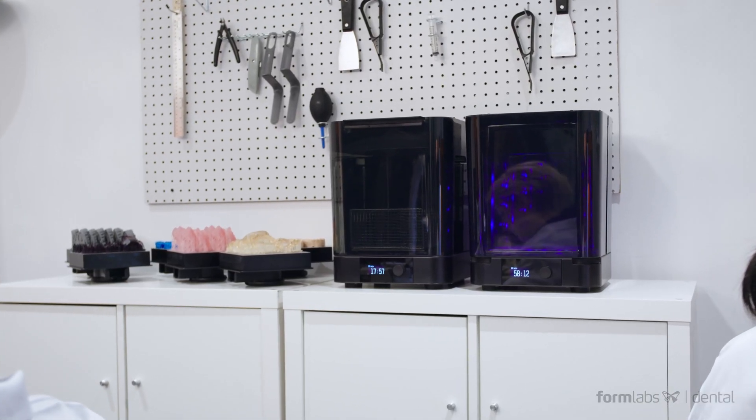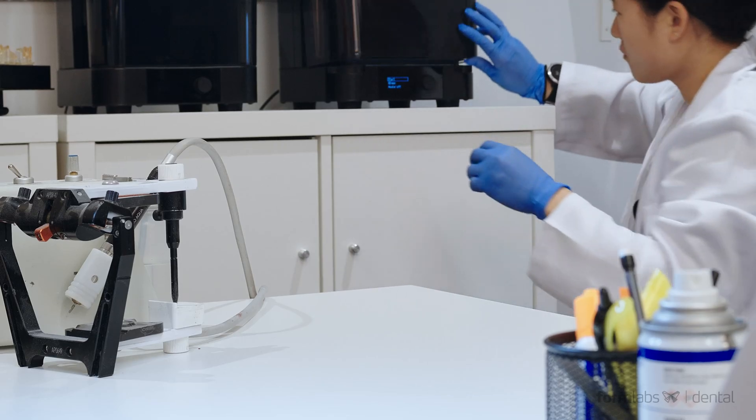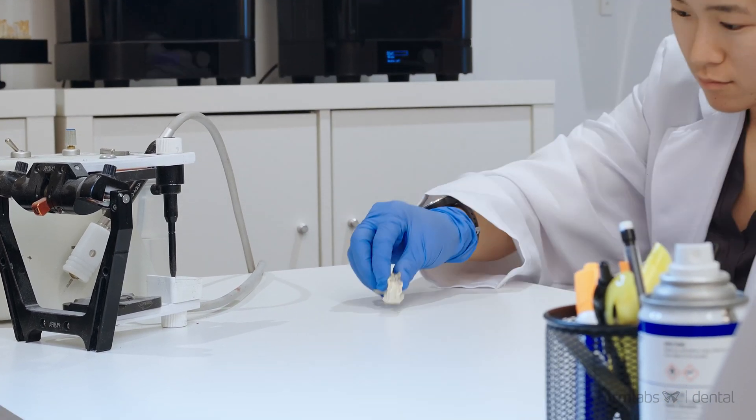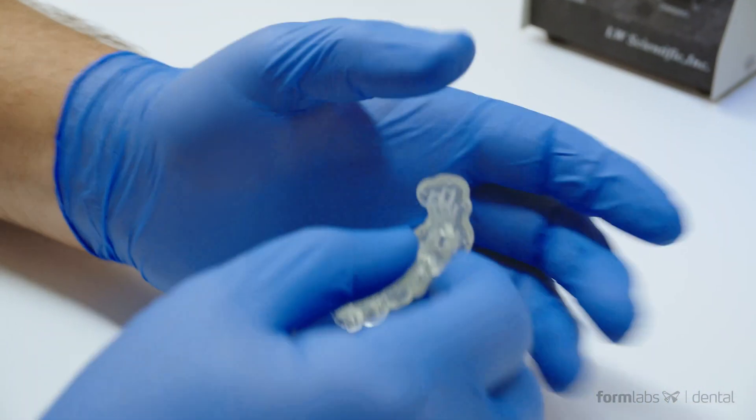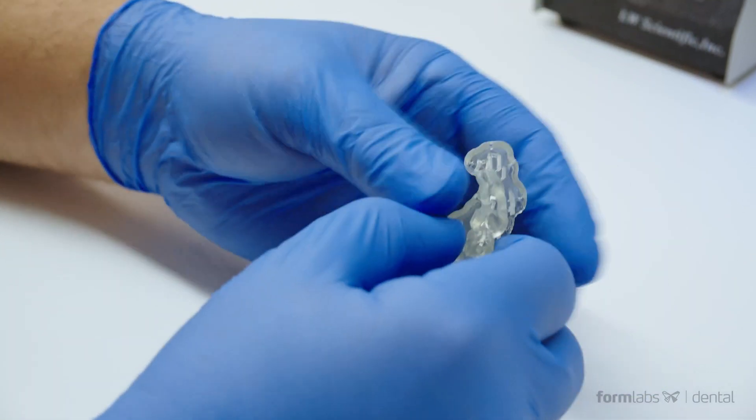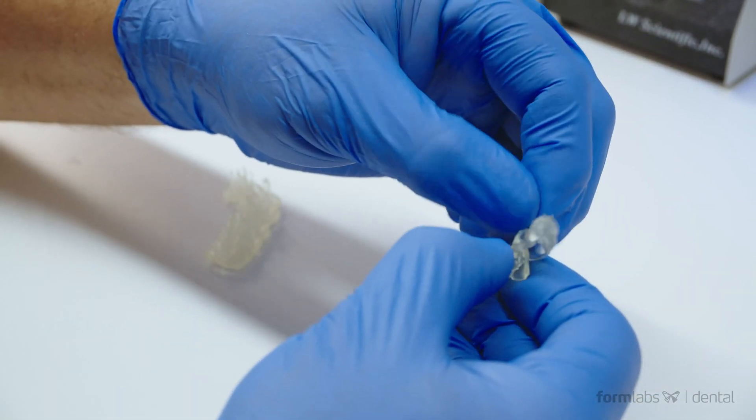you can take it to the finishing station, where it will be washed in IPA, post-cured, and prepared for use. Light touch supports make removing support structures easy and leave virtually no marks on the part's surface.